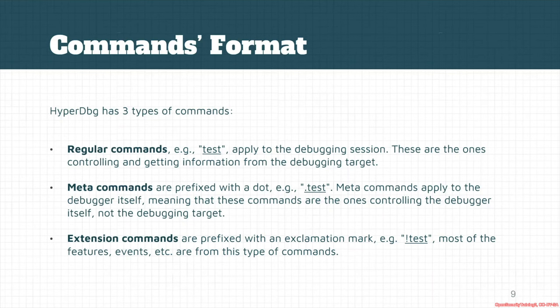There's also a meta command. Meta commands are prefixed with a dot. These commands apply to the debugger itself — not to the debuggee, but to the debugger — controlling the debugger itself. Another important group are extension commands. Almost all of the events — not all of them, but a good portion — start with an exclamation mark, and most of the events are from these types of commands.